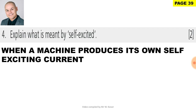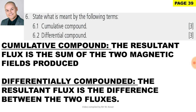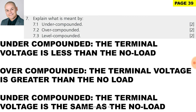Question 4: Self-excited means a machine produces its own self-exciting current. Three types of self-excited generators: series, shunt, and compound. Cumulative compound: the resultant flux is the sum of the two magnetic fields. Differentially compounded: the resultant flux is the difference between the two fluxes. Under compounded: terminal voltage is less than no-load. Over compounded: terminal voltage is greater than no-load. Level compounded: terminal voltage is the same as no-load.